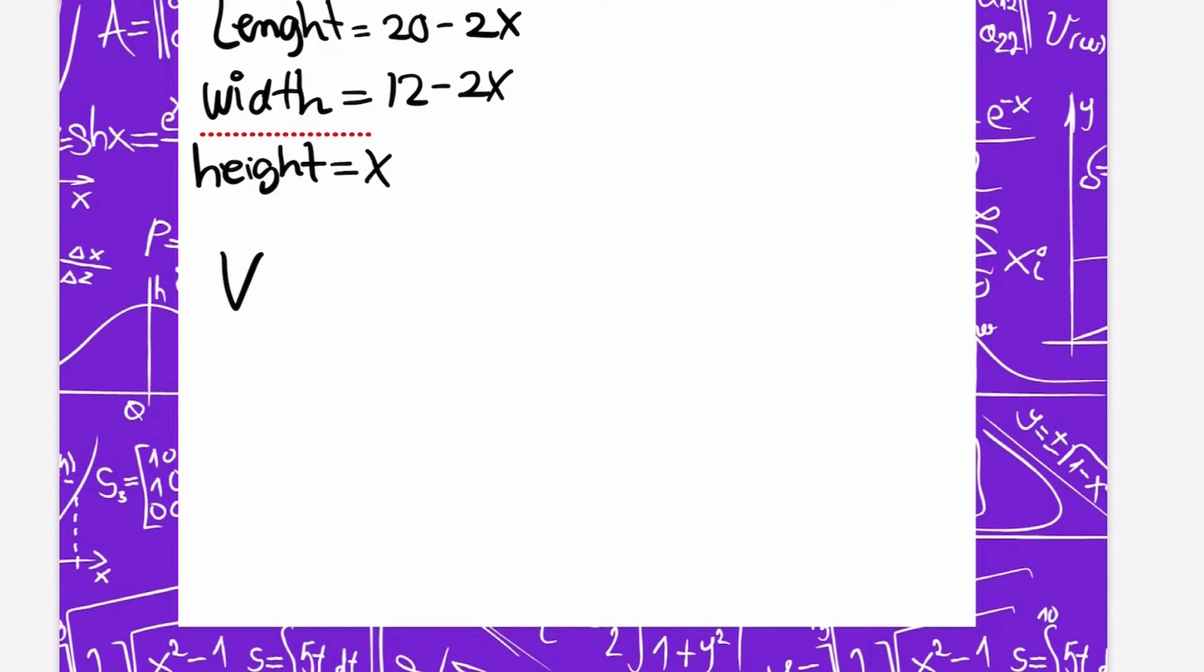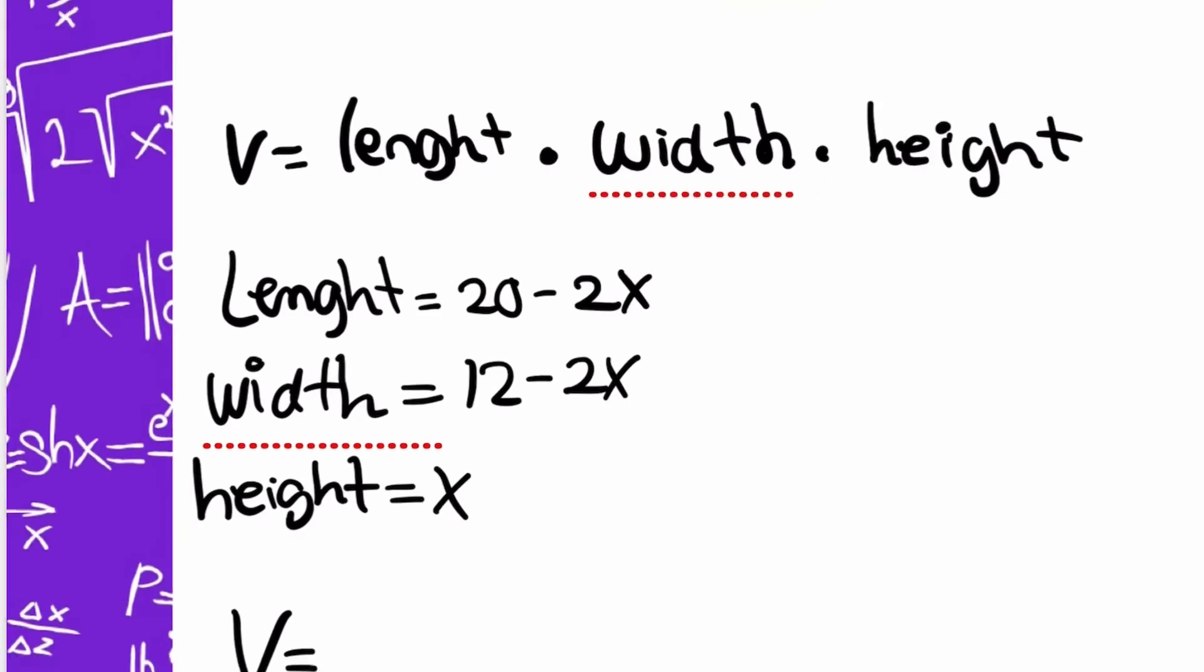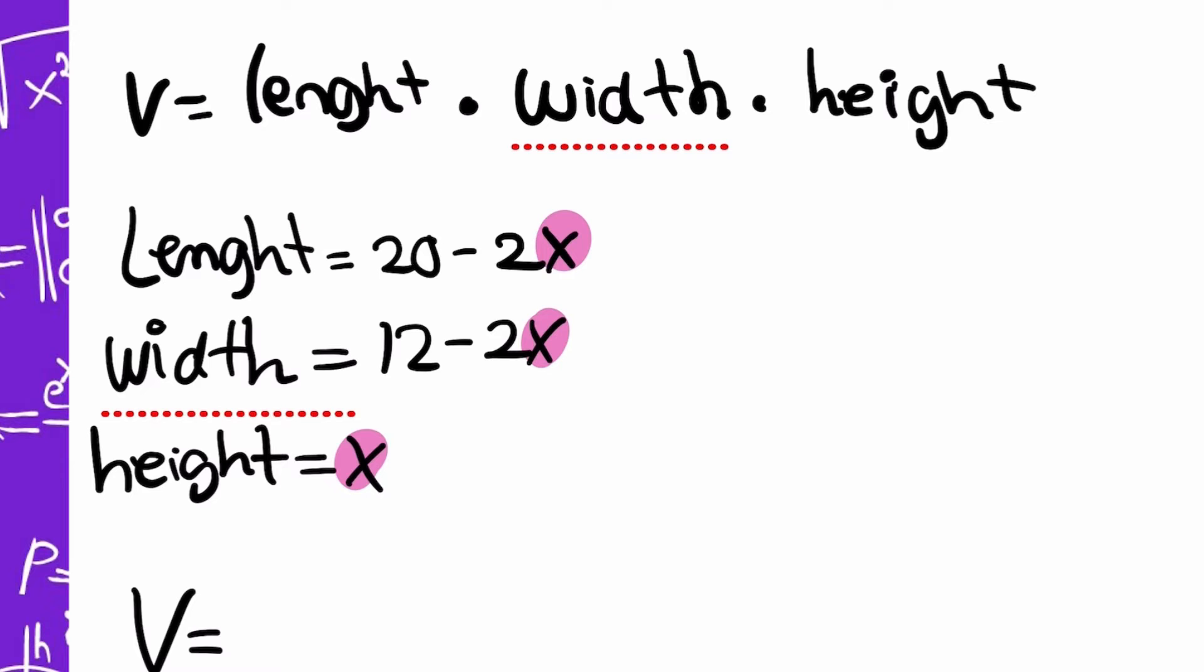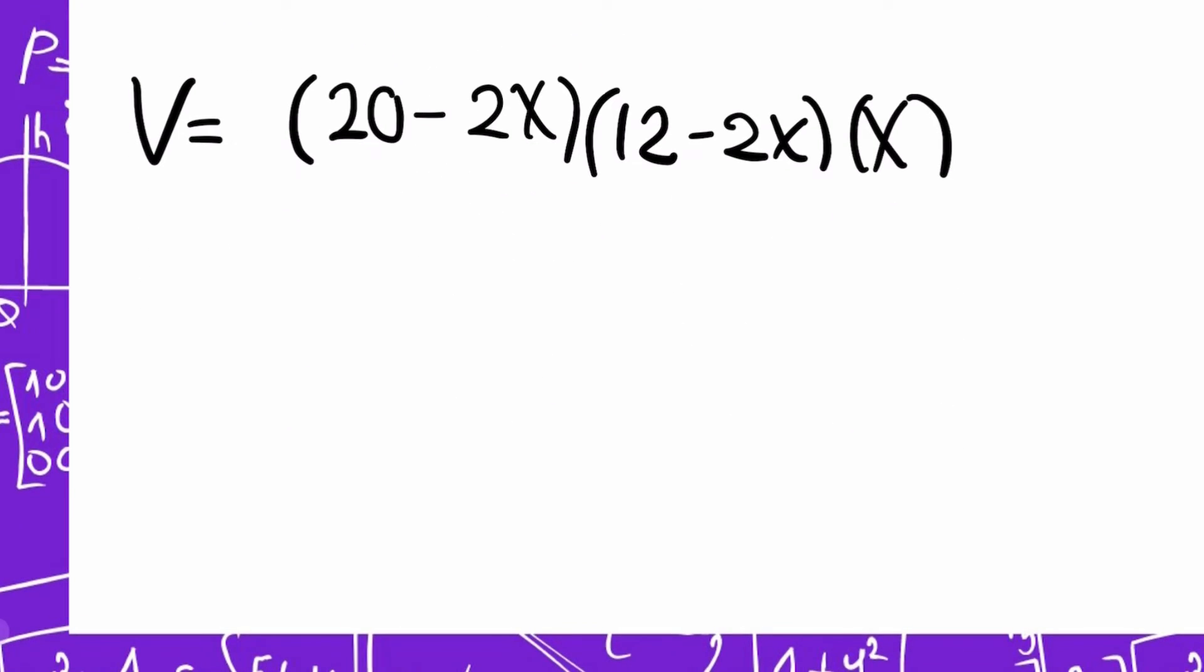And now I need to multiply all of this. So volume... I need to find the volume V of the box as a function of x. Here we only have x, so it's all right, we're doing it the right way. So first, 20 minus 2x times 12 minus 2x times x. Now I need to solve this because this is not the answer. I'm going to first solve this multiplication because I think it's easier.